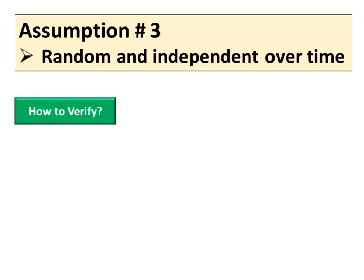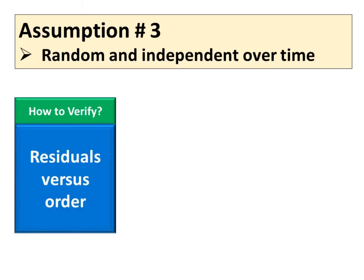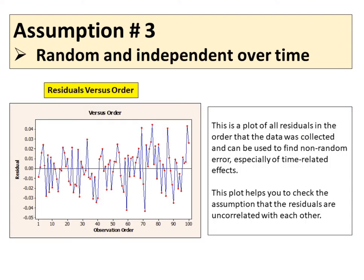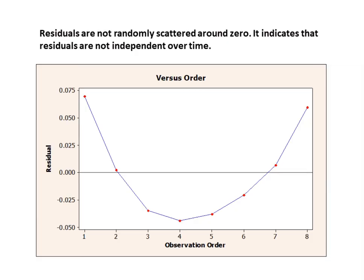The third assumption is random and independent. How to verify the assumption of random and independent? A method of checking the random and independent is to construct a residuals versus order plot. This is a plot of all residuals in the order that the data was collected and can be used to find non-random error, especially of time-related effects. This plot helps you to check the assumption that the residuals are uncorrelated with each other. In this example, residuals are not randomly scattered around zero. It indicates that residuals are not independent over time.